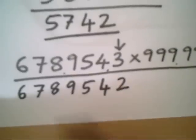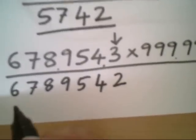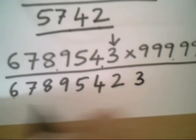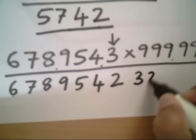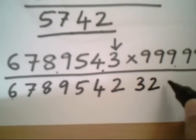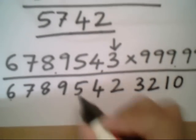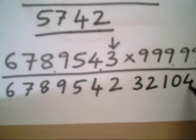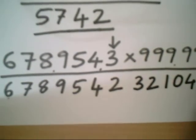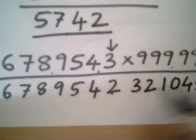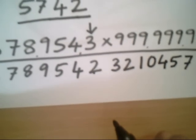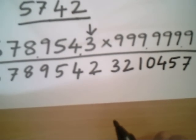Now all these numbers I subtract from 9. See what happens. That is 9 minus 6 is 3, 9 minus 7 is 2, 9 minus 8 is 1, 9 minus 9 is 0, 9 minus 5 is 4, 9 minus 4 is 5, and 9 minus 2 is 7. See, I got the product within few seconds. Is it not wonderful?